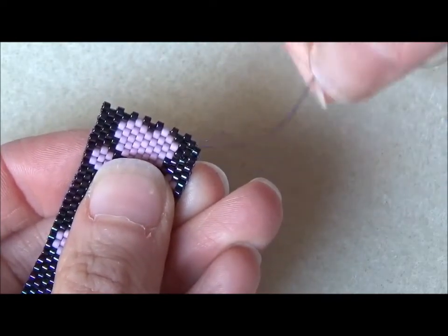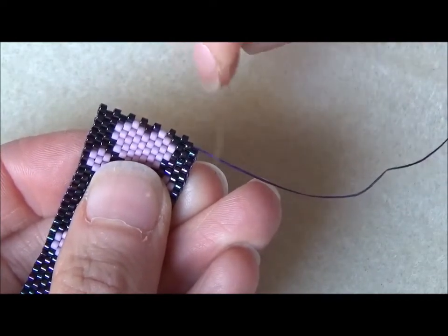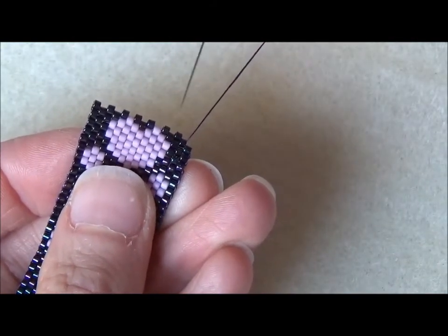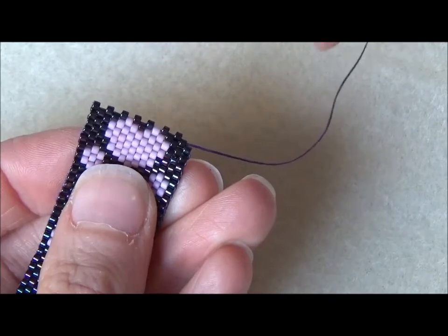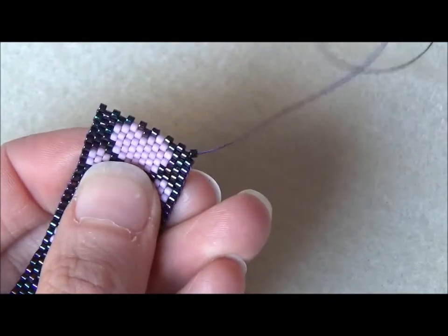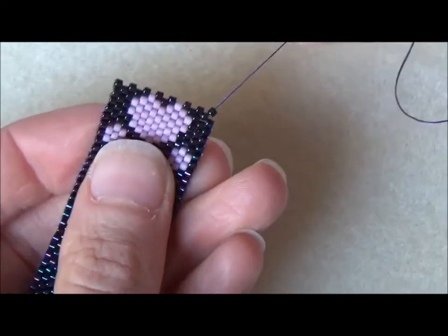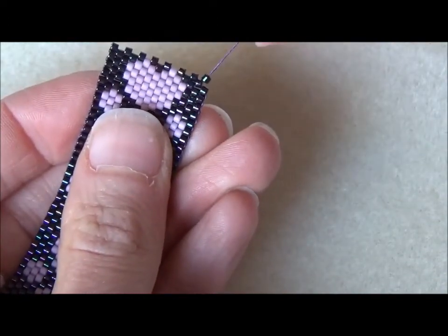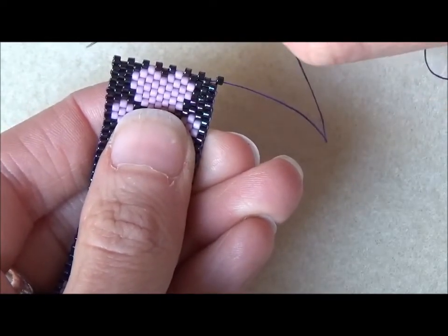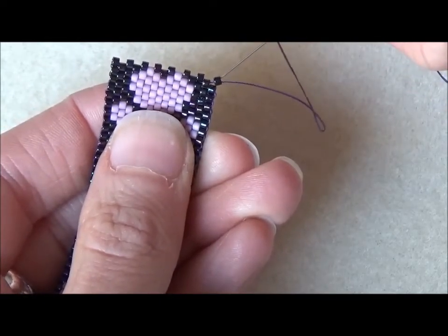This is where it starts to get tricky. My thread gets caught up at this stage. Right at the end, this is where odd count gets a little bit more complicated than even count peyote stitch. Obviously I need a new bead.